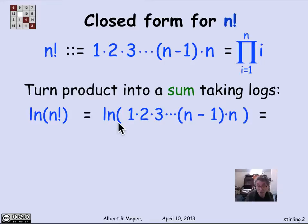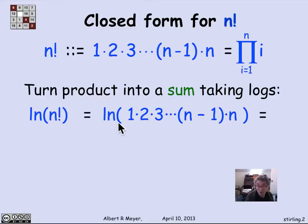So log of n factorial is the product of 1 through n. But a log of a product is the sum of the logs. So it's simply log of 1 plus log of 2 up through log of n. And expressed in sum notation, it's the sum from i equals 1 to n of log of i.